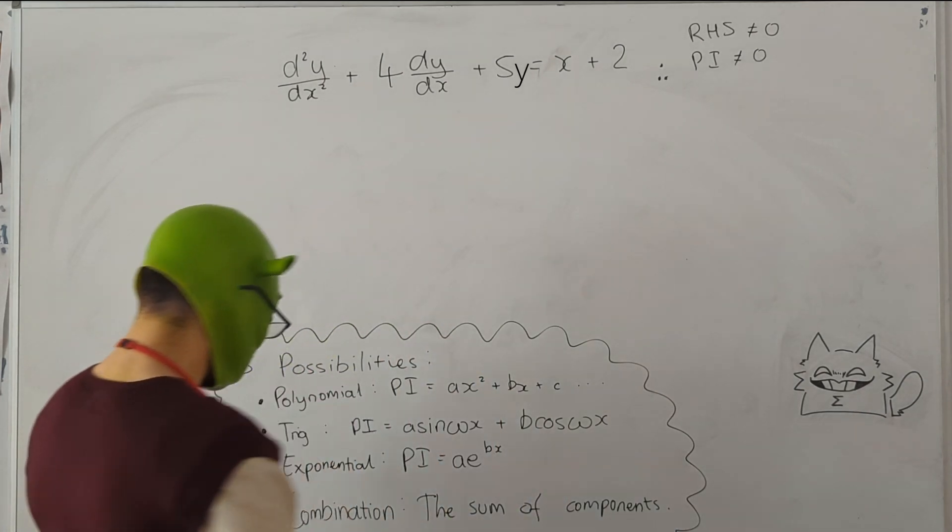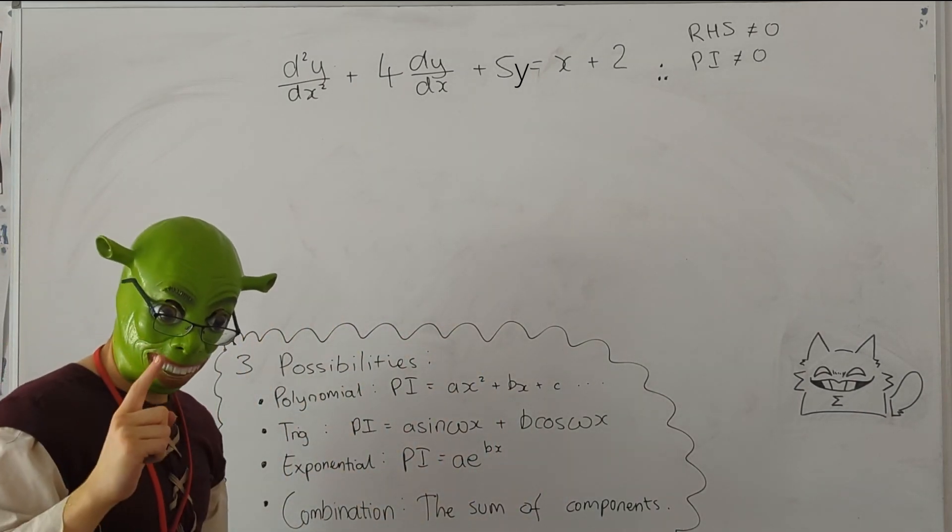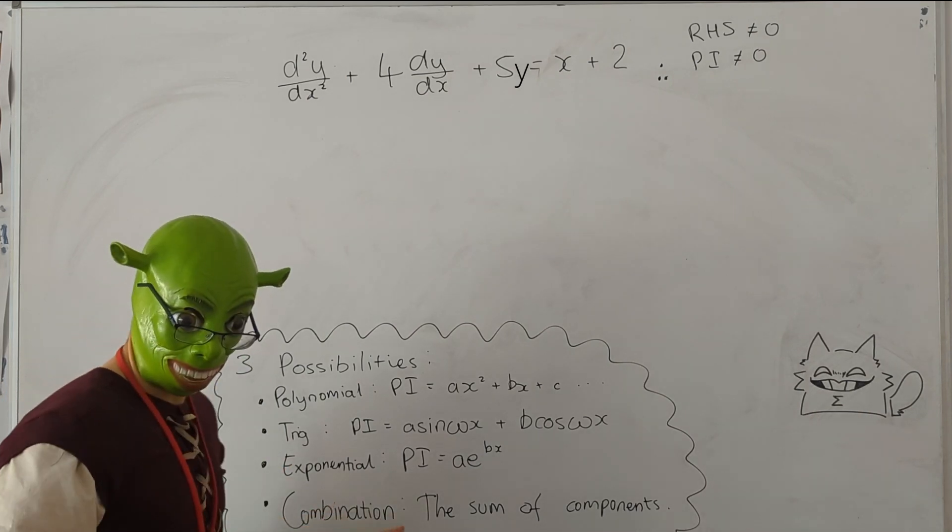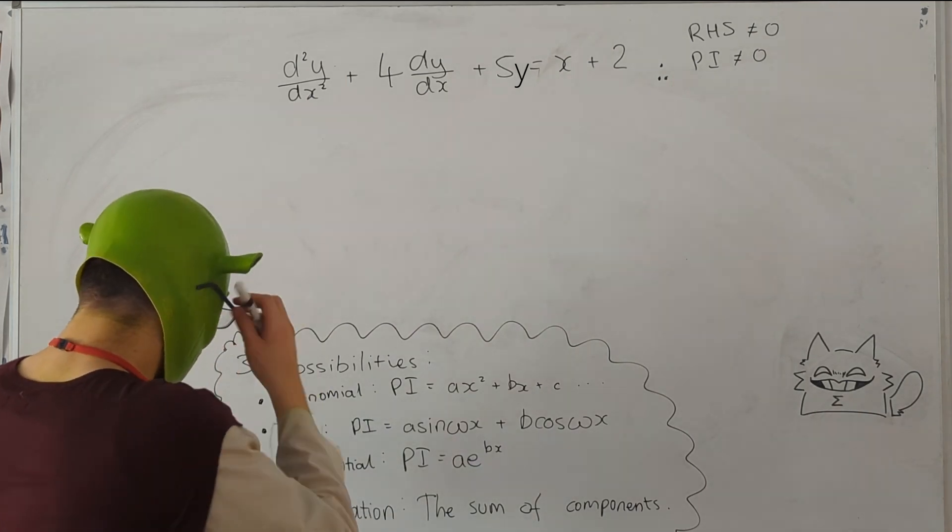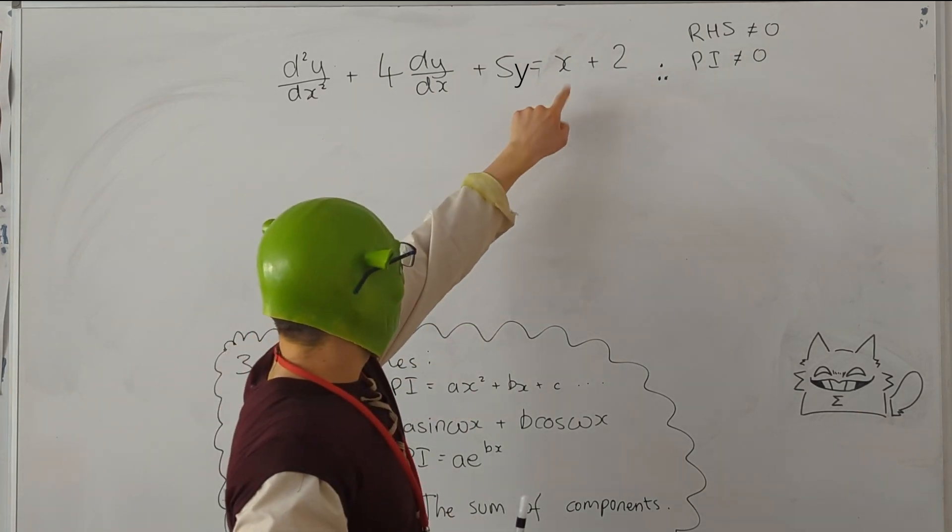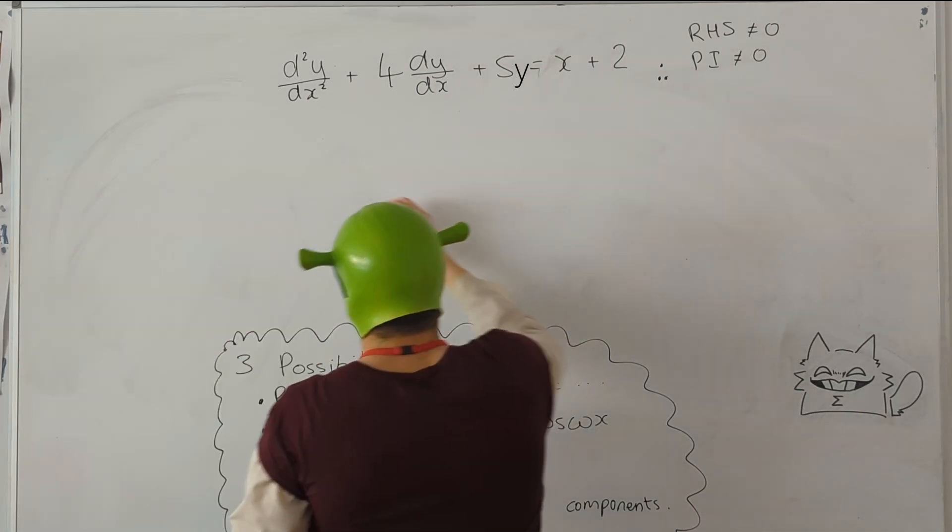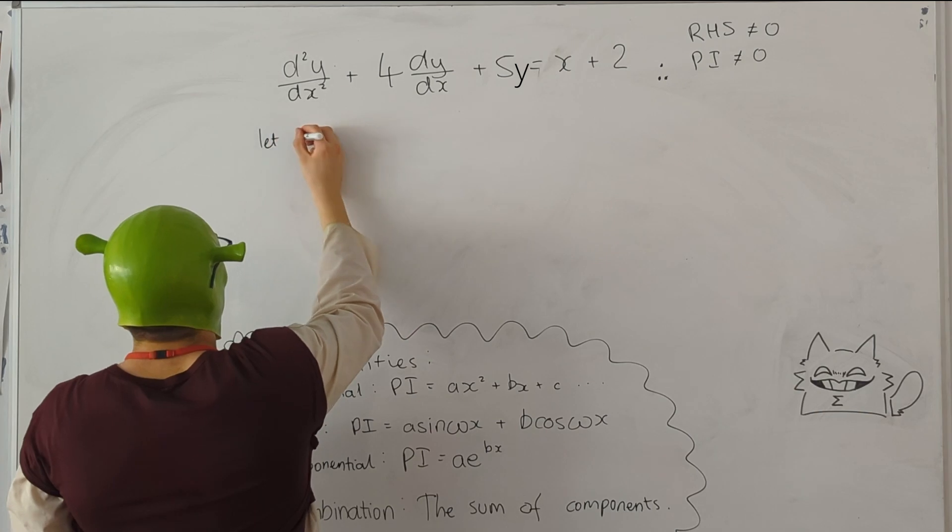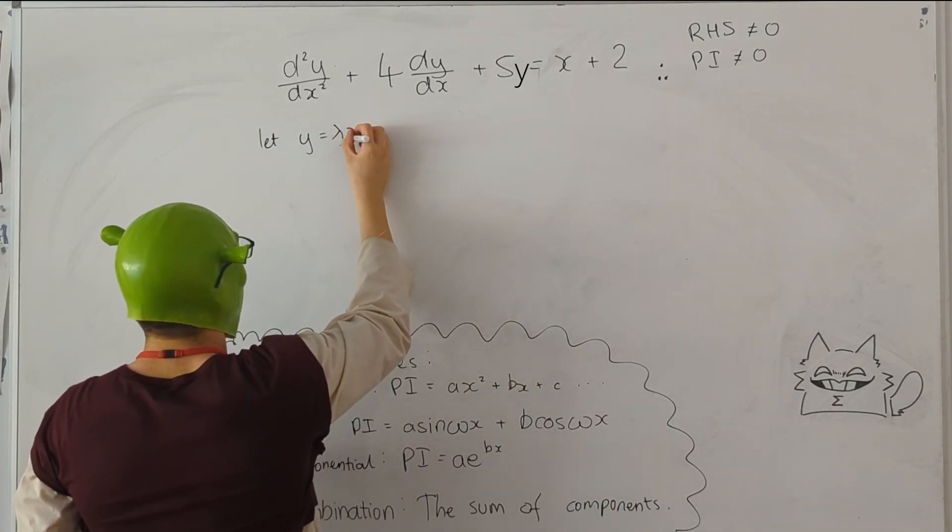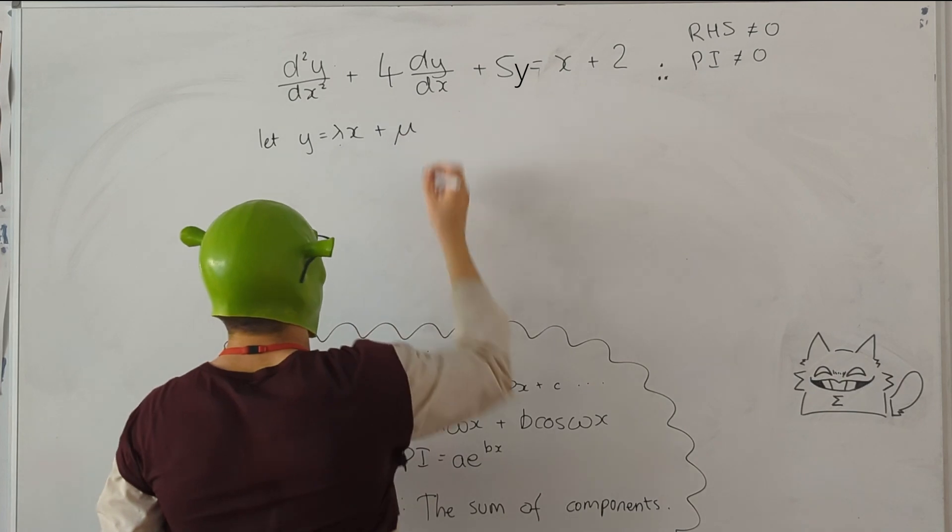So there are three possibilities with the particular integral. There is a polynomial, a trig, an exponential, and a combination of those. In here, we have a polynomial. This one is a quadratic, but this one is a linear. So all I'll need for this one is to write y equal lambda x plus mu.